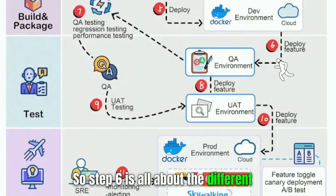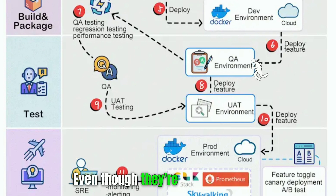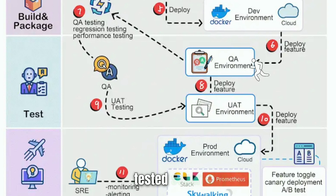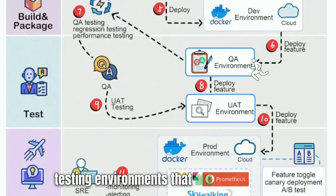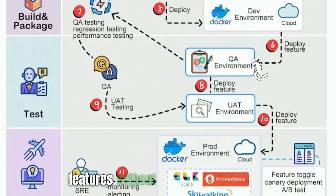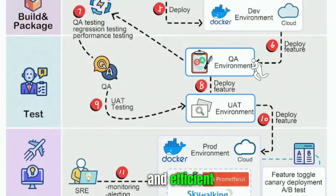Step six is all about the different teams working on different features. Even though they're working on different features, all of those features need to be tested separately. That's where QA1 and QA2 come in. QA1 and QA2 are separate testing environments used for different teams, so that each team can test their features without interfering with the others. This helps keep the testing process organized and efficient.